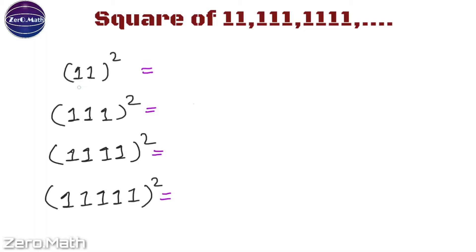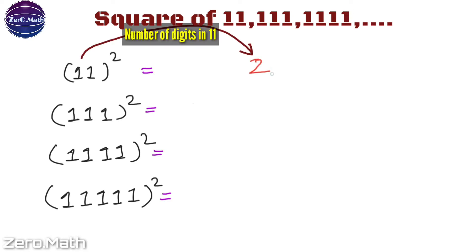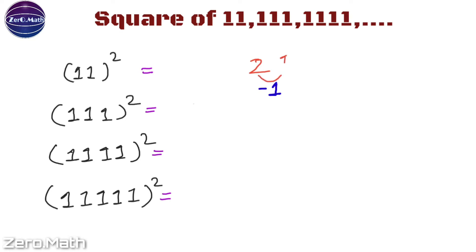Let's find out the square of 11. The first step is to count the number of digits — 11 has 2 digits. Write down 2. Now reduce 1 from 2 and write it to the right hand side: 2 minus 1 is 1. Again reduce 1 from 2 and write it on the left hand side. So the answer is 121, which is the square of 11.